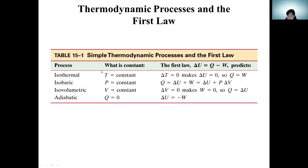In isothermal processes, delta T equals zero, so delta U equals zero, meaning heat equals work. At isobaric processes, Q equals delta U plus work. At isochoric or isovolumetric processes, delta V equals zero, so Q equals delta U. In adiabatic processes, Q equals zero, so delta U equals minus W — meaning the work is done by the decrease in internal energy.